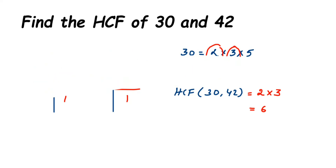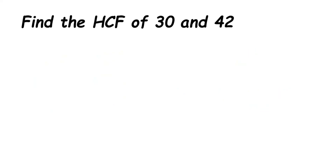Now I'll show you the division method — you'll get the same answer. The division method is similar to normal division but the method changes from the second step onwards. From 30 and 42, choose the divisor and dividend: the divisor is the smaller number, so 30 is the divisor, and 42 is the dividend.